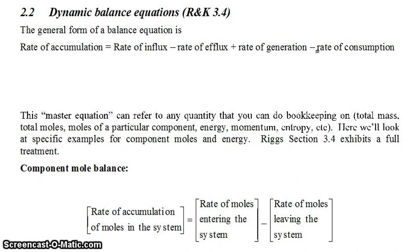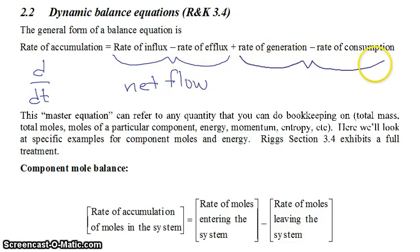Now the way these terms play out as you're actually writing down the equations, your rate of accumulation is going to be looking something like a time derivative. The rate of influx and the rate of efflux together would be like net flow. The rate of generation minus the rate of consumption together would be something more like net reaction, usually.